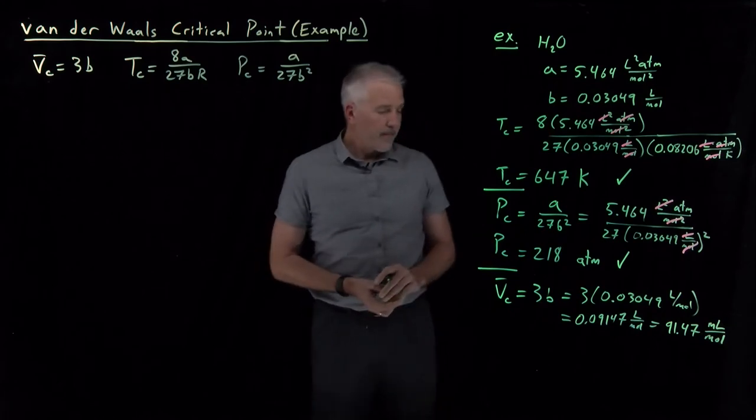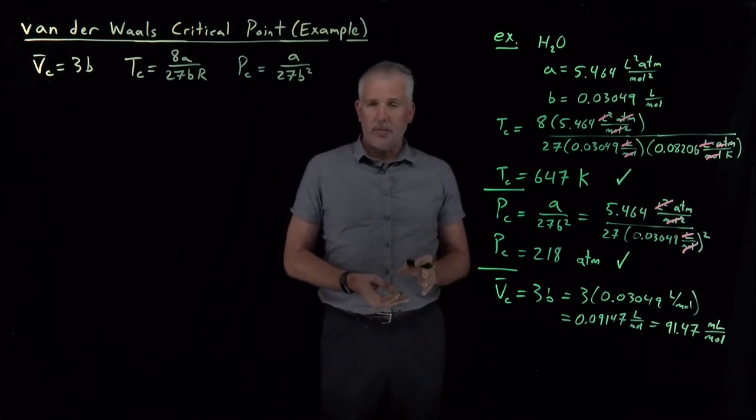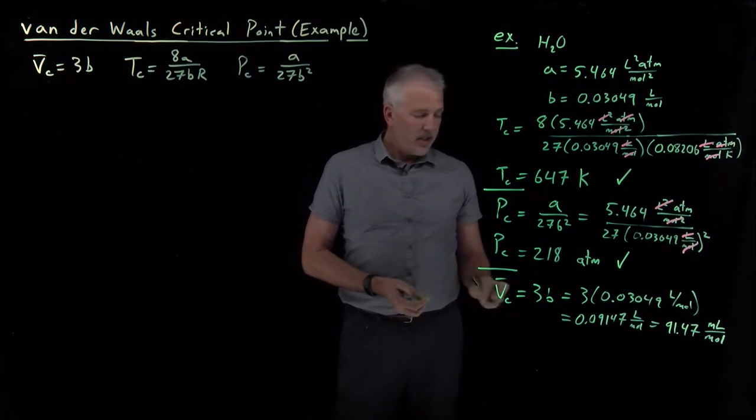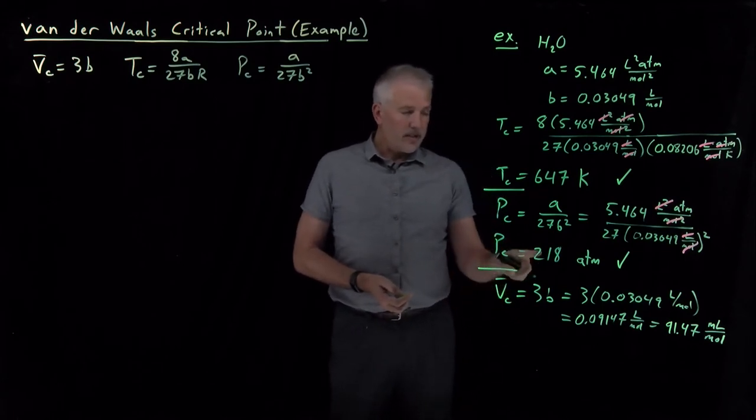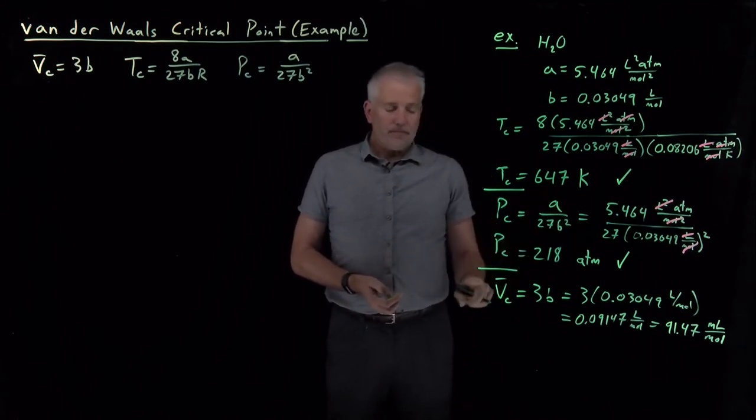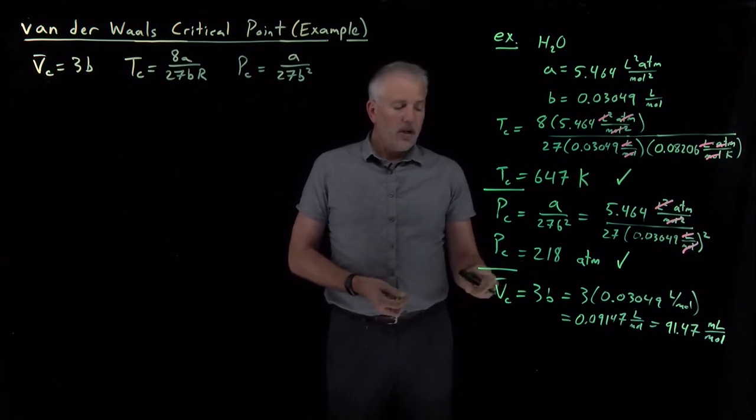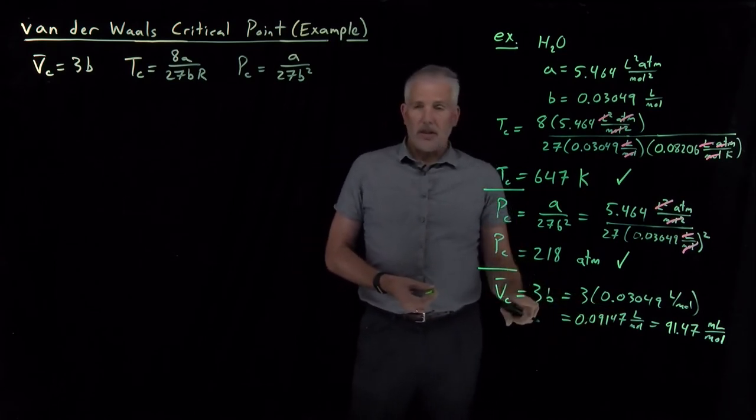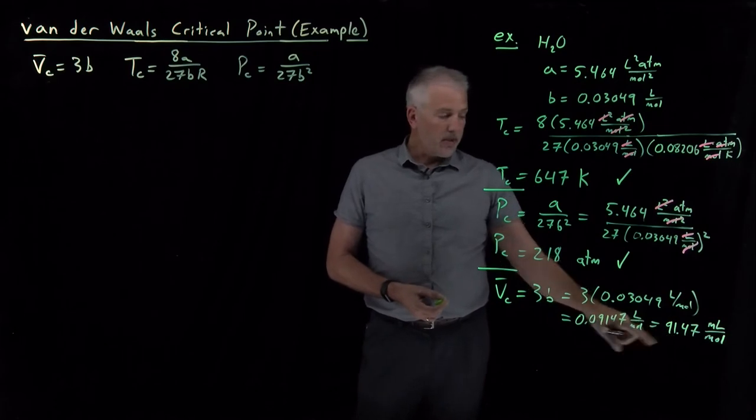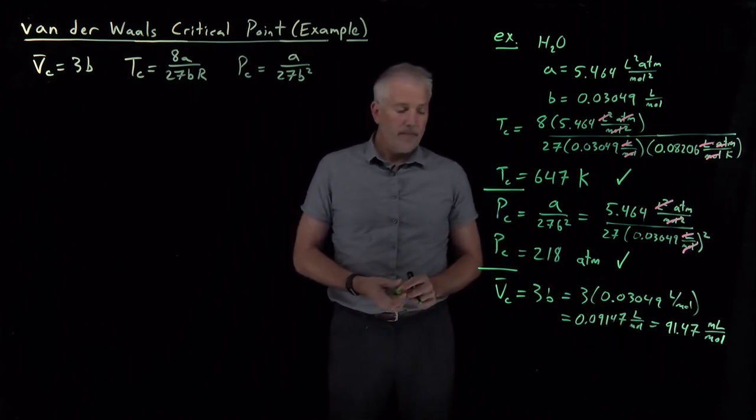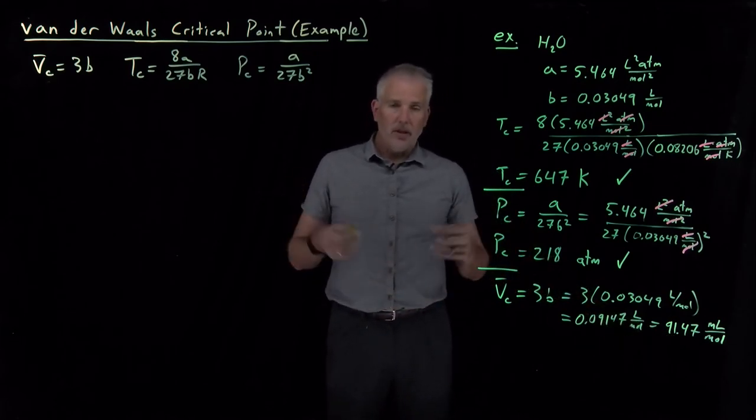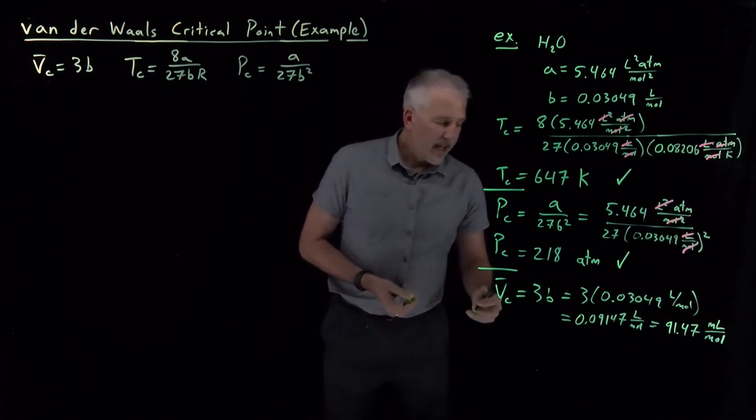So 91 milliliters. A mole of water, liquid water at room temperature, remember, takes up about 18 milliliters. At the critical point, at this very elevated temperature and this particular pressure, water will take up, according to the Van der Waals equation, should take up 90 milliliters rather than 18 for the liquid or several liters for the gas.